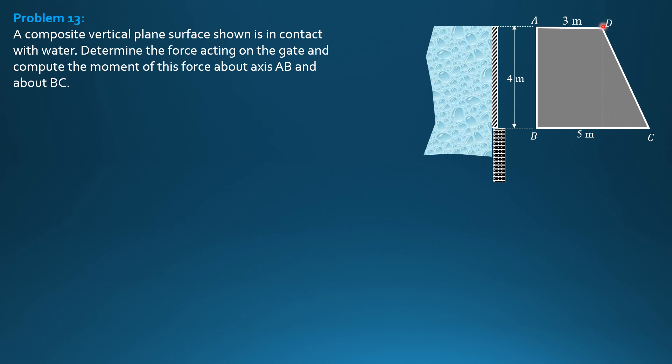So the location of the CG and center of pressure would be here for the rectangular gate. Since the water surface is flush with the liquid surface, CP1 is located two-thirds of 4, or 8/3 from the top.